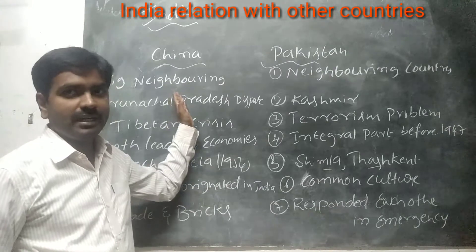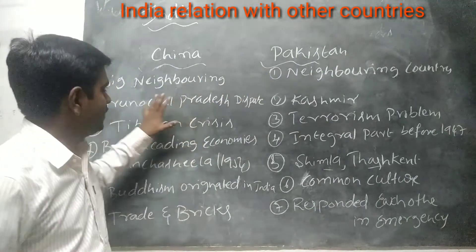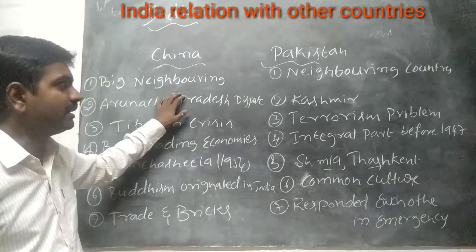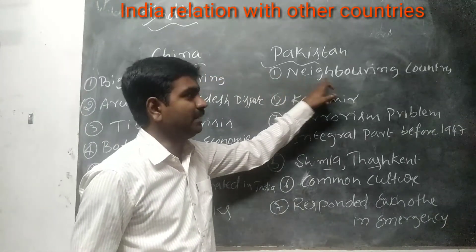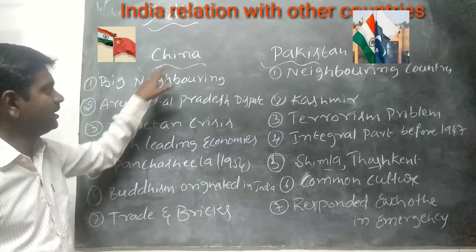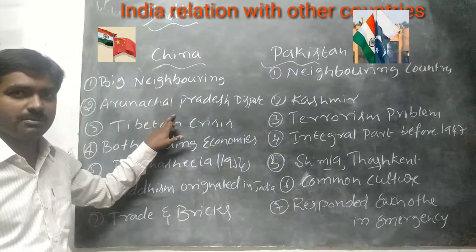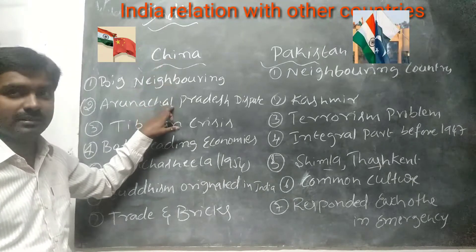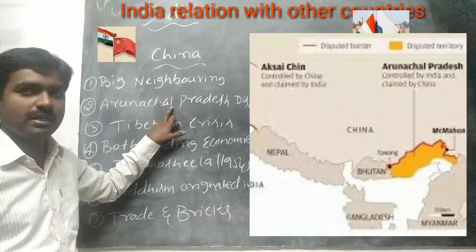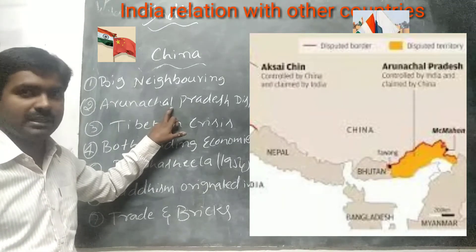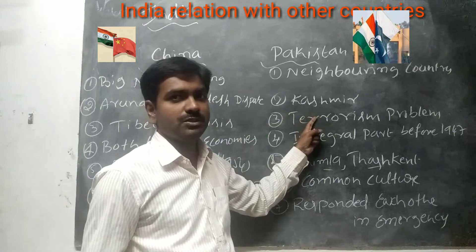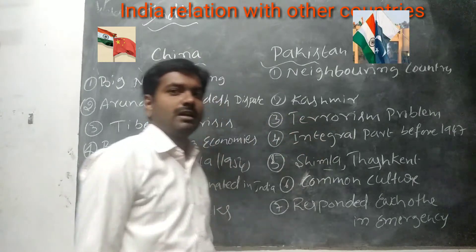India and China: China is one of the big neighboring countries for India. Similarly, Pakistan is also a neighboring country. India and China have a dispute about Arunachal Pradesh — China claims it is their integral part. The dispute between India and Pakistan is about the Kashmir issue.